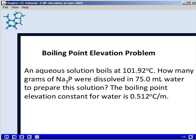In this problem we're going to look at boiling point elevation. We have an aqueous solution that boils at 101.92 degrees Celsius. We want to know how many grams of sodium phosphide were dissolved in 75.0 milliliters of water to prepare the solution. The boiling point elevation constant for water is 0.512 degrees Celsius per molality.